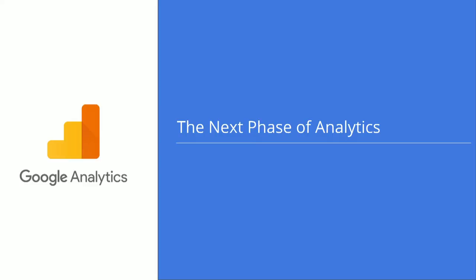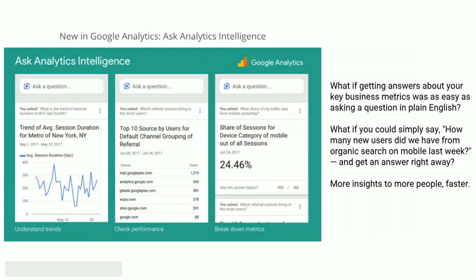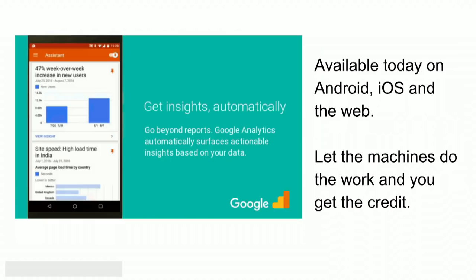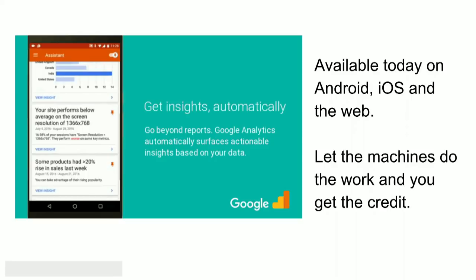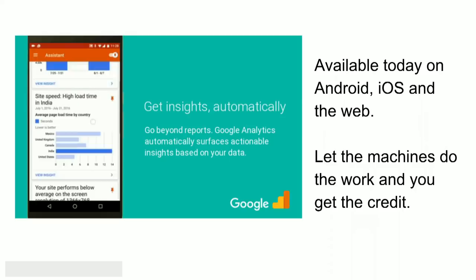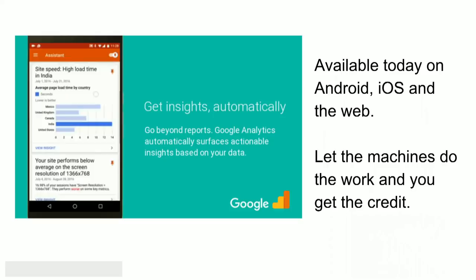What's coming next for analytics? We want to get to the point where you can talk directly to your analytics and ask direct natural language queries and get the answer you want right away. What if that answer was as easy as asking in plain English: how many new users did we get from organic search on mobile last week? We now have that option, available on Android, iOS, and the web. We would prefer that the machines do all the work and you get the credit — the machines will find out what's different and bring it directly to you, so you're using smart analytics and getting answers quickly.